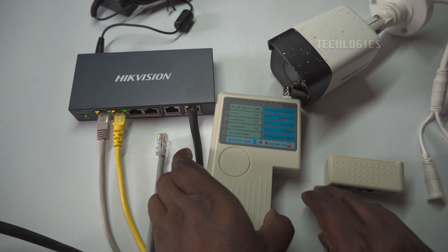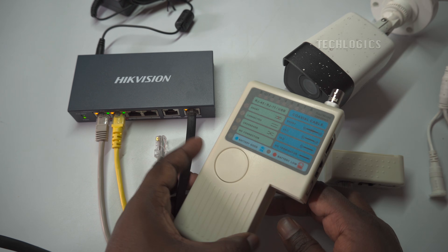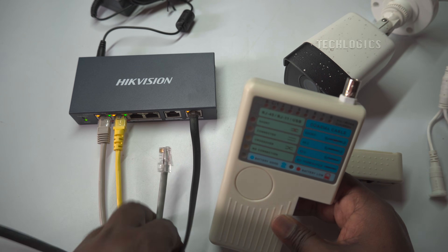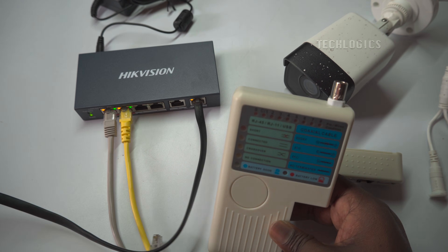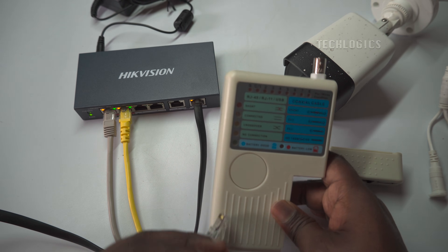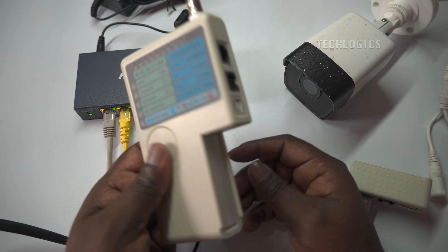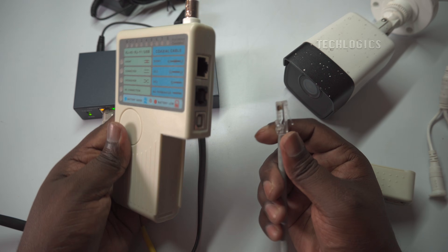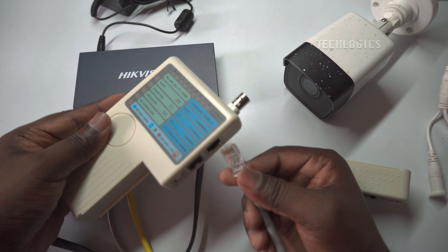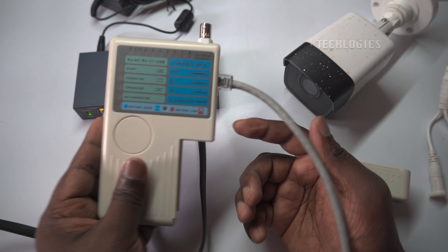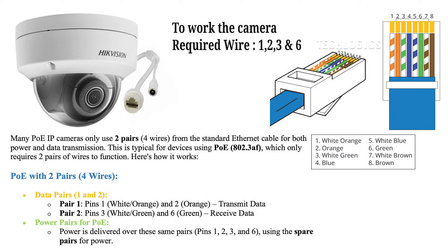Most modern POE cameras only require two pairs, four wires, for both power and data transmission, while a standard CAT6 Ethernet cable has four pairs, eight wires. By rearranging and utilizing the functional wire pairs, you can restore the camera's connection without needing to replace the entire cable.